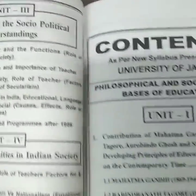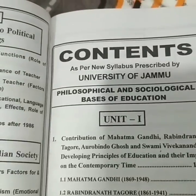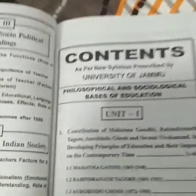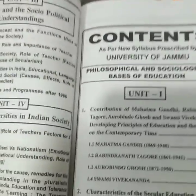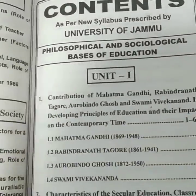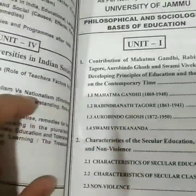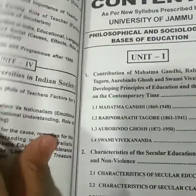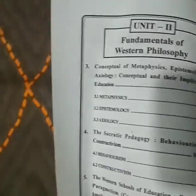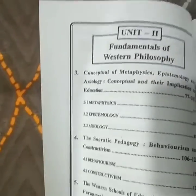Everything is mentioned in the syllabus. Now let's come to the contents to check and verify whether the contents match the syllabus or not. In the contents, Unit 1 shows 'Contribution of Mahatma Gandhi and Rabindranath Tagore' — in the syllabus it was the same. Then 'Characteristics of Secular Education' — in the syllabus it was also 'Characteristics of Secular Education.' So you can verify that everything in the syllabus is covered in the contents.